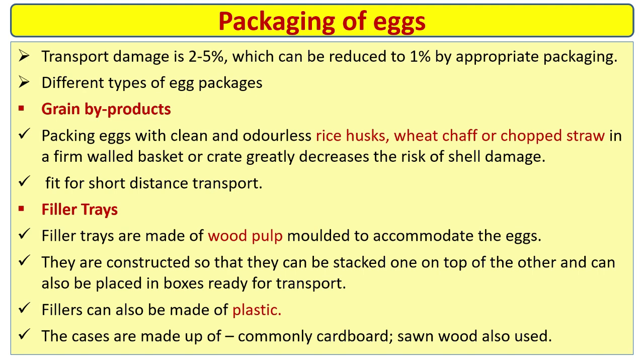Filler trays are made of wood pulp molded to accommodate the eggs. They are constructed so that they can be stacked one on top of the other and can also be placed in boxes ready for transport. Fillets can also be made of plastic. Cases are commonly made of cardboard; wood is also used.